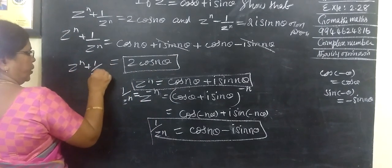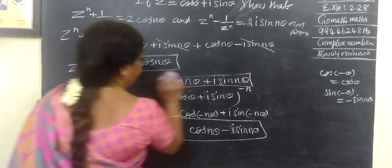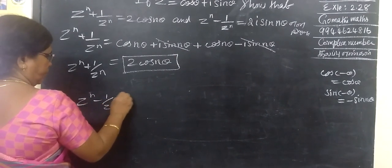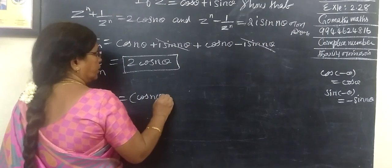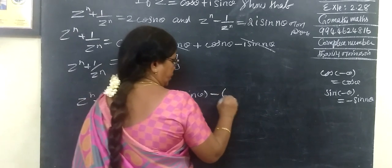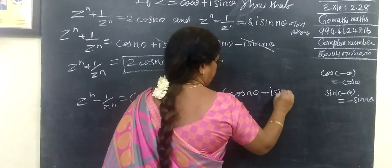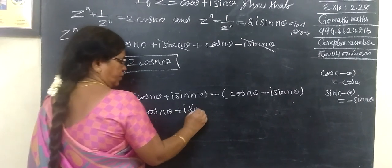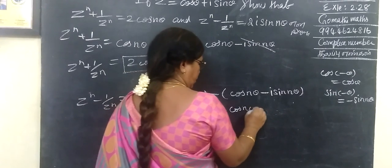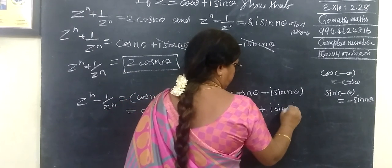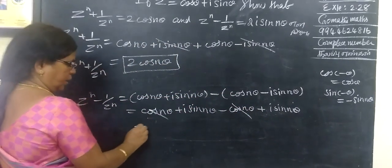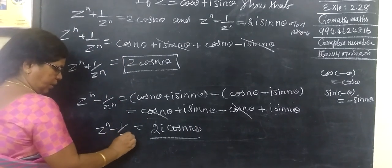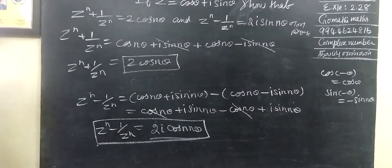And z power n minus 1 by z power n equals cos n theta plus i sin n theta minus cos n theta minus i sin n theta, which simplifies to 2i sin n theta.